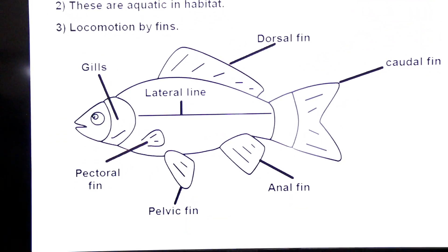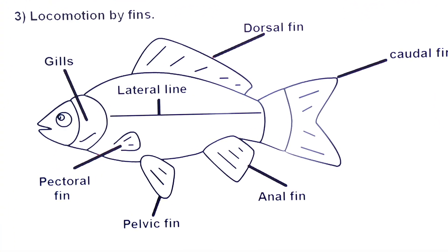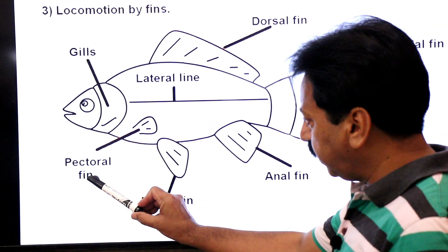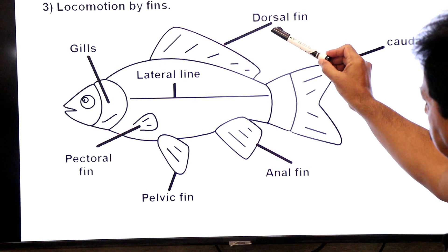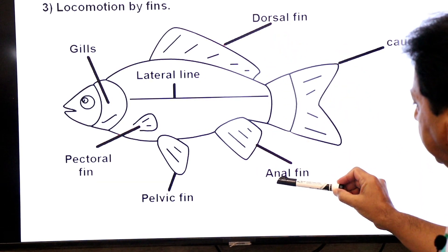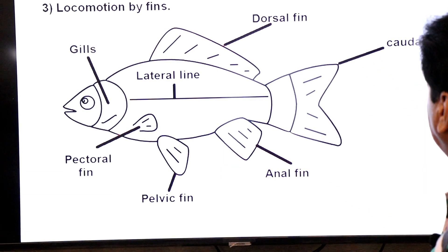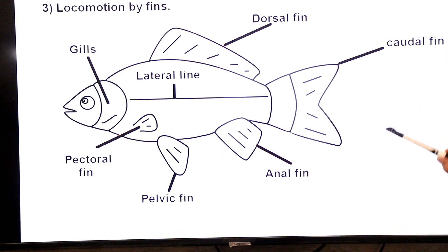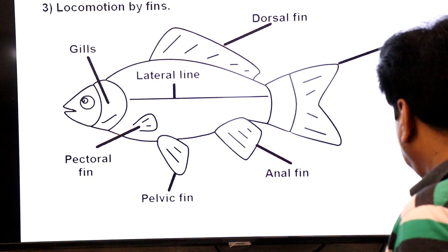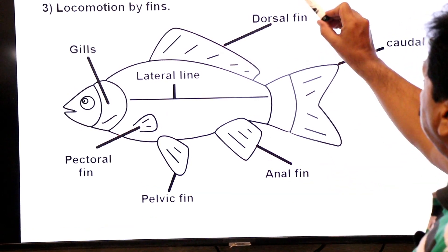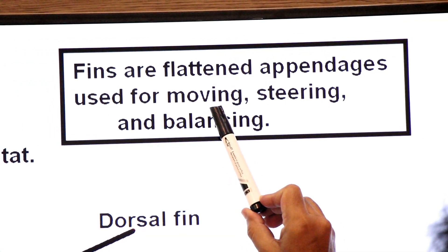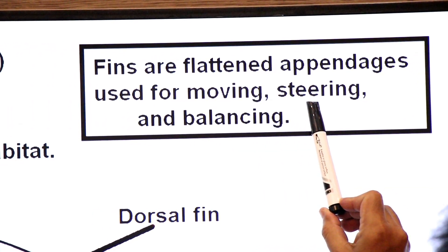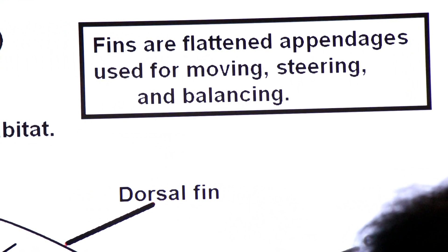This is the diagram showing fins in a fish. Here you see: pectoral fin, pelvic fin, dorsal fin, ventral fin (also known as anal fin), and in the tail region there is a caudal fin. Fins are flattened appendages used for moving, steering, and balancing.